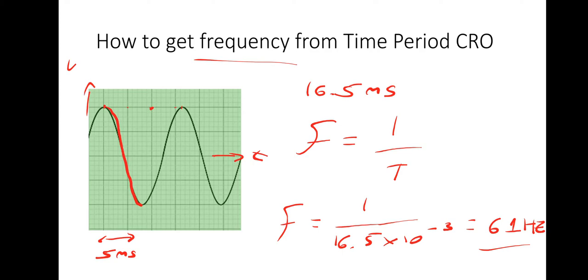On the signal generator, or the oscillator that it's attached to, you normally can read the frequencies, but you can't really trust that reading. So that's why we use a cathode ray oscilloscope. So we can get a time period. So we can find a frequency.